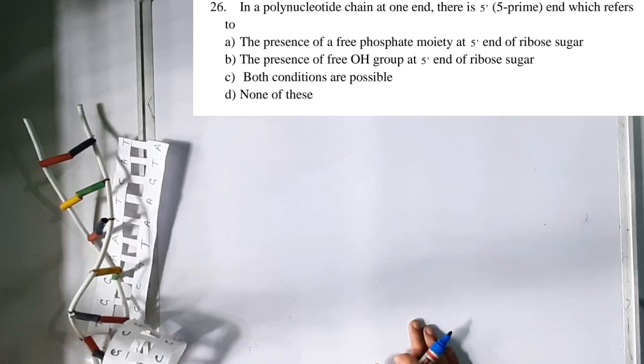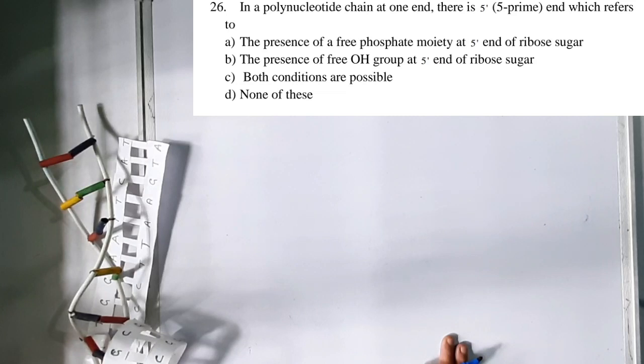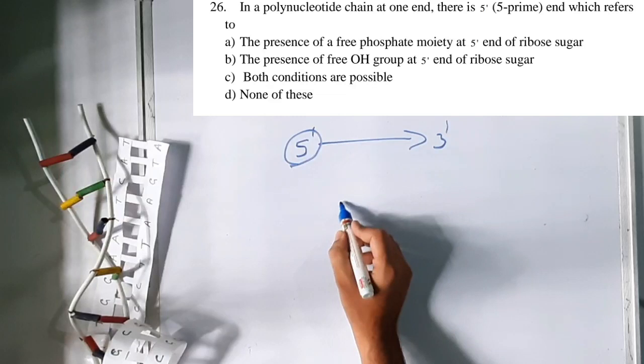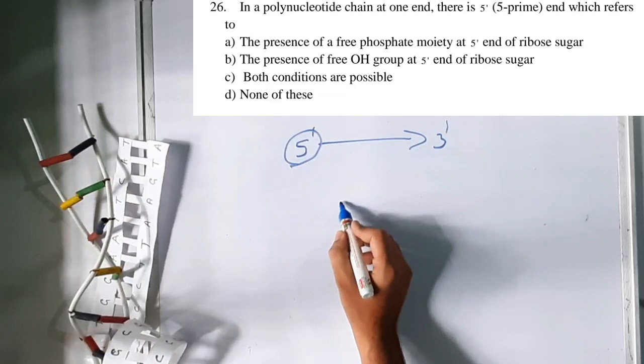Question 26: In a polynucleotide chain, the 5' end refers to the presence of a free phosphate moiety at the 5th carbon atom of the ribosugar. The 5' carbon has the phosphate group attached. This is why we refer to DNA polarity as 5' to 3'.